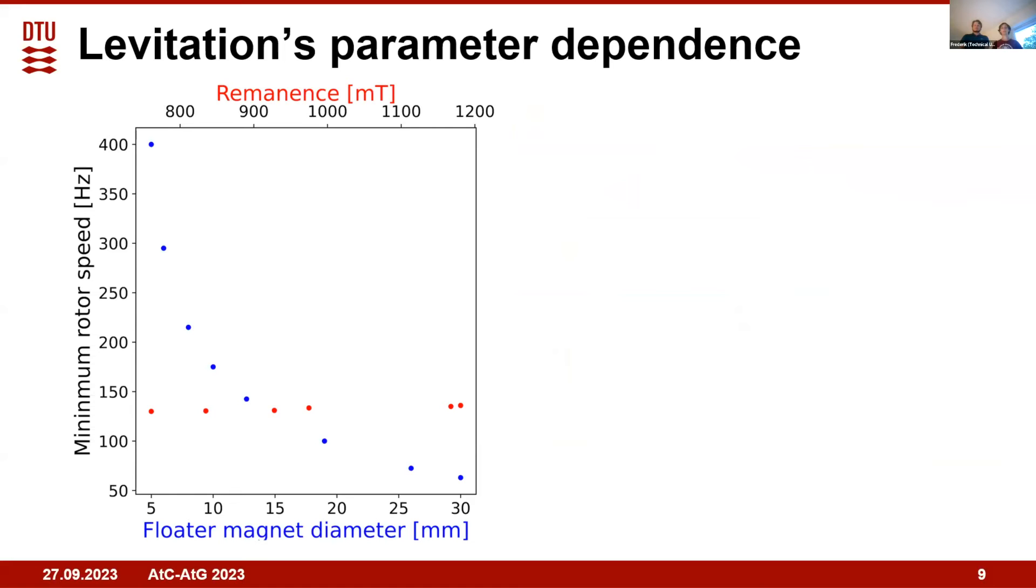Here in this graph we see the minimum speed at which the rotor has to rotate for levitation to occur. Here we can see as the magnets become larger, they have more inertia and thereby levitate at lower speeds than the smaller magnets, whereas magnetization doesn't really affect the minimum speed required for levitation.